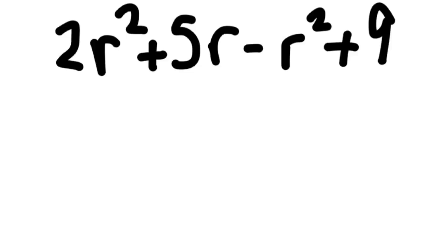All right, so we have 2r² + 5r - r² + 9. Use the plus and minus signs to tell you where the terms are, and in this case there are four terms.